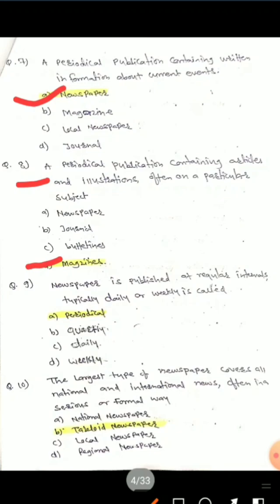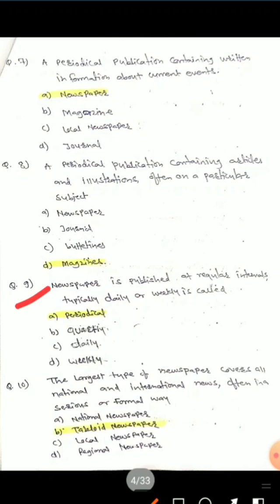Question 9: A newspaper published at regular intervals, typically daily or weekly, is called what? Options are: periodical, quarterly, daily, weekly. The correct answer is periodical.